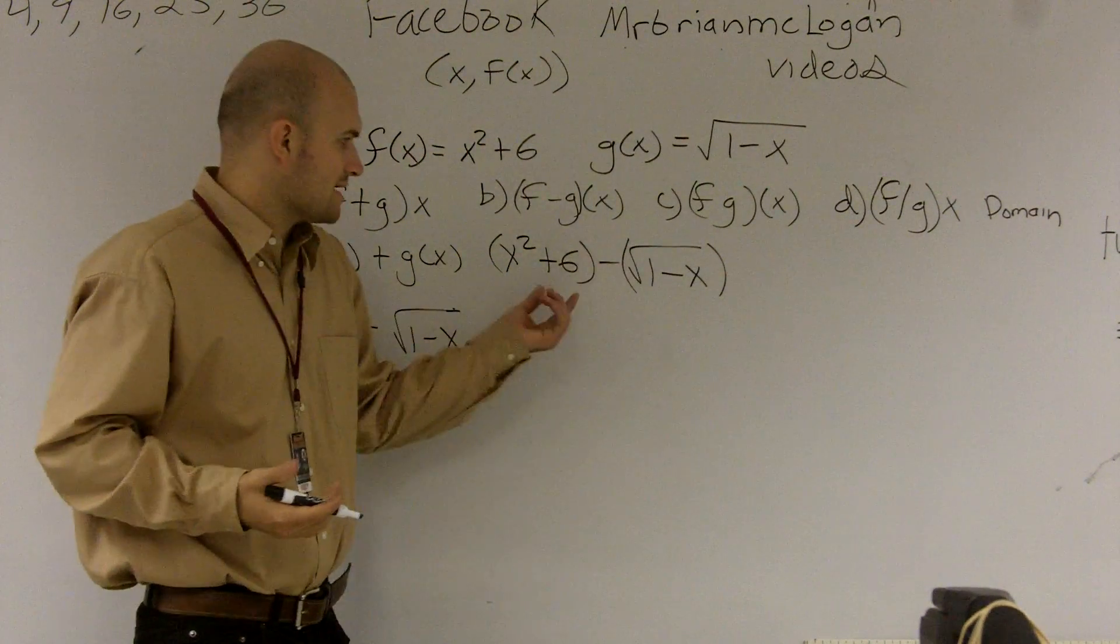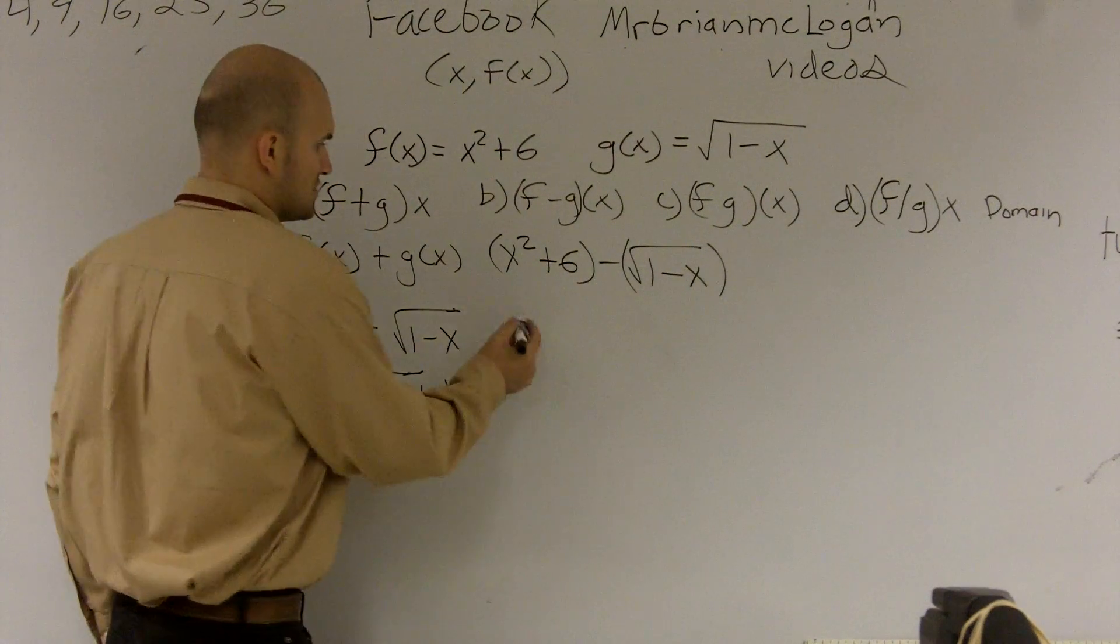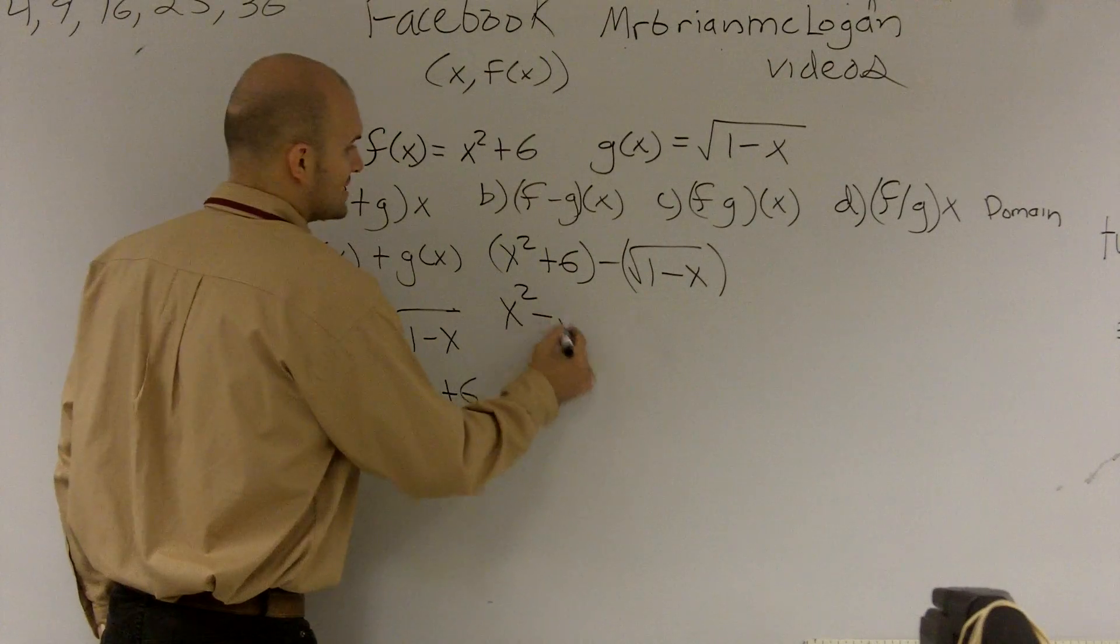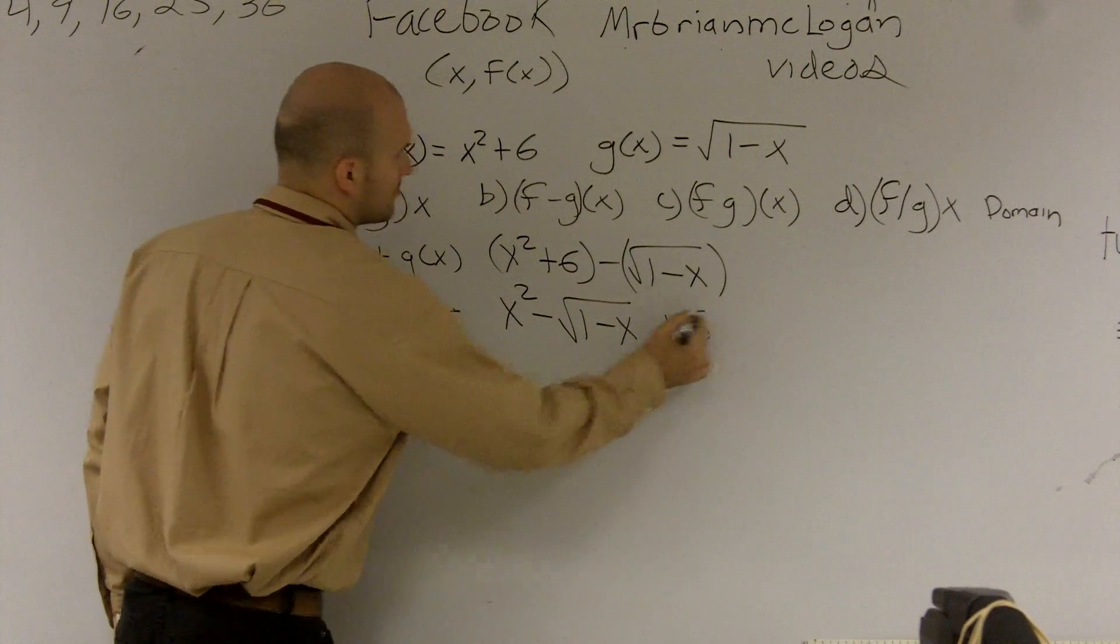All right, now there's only one turn here, so it actually works out. But again, there's really nothing we can combine with these two. So it just becomes x squared minus square root of 1 minus x plus 6.